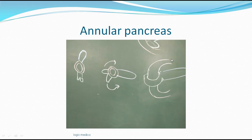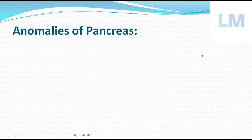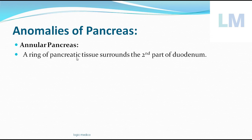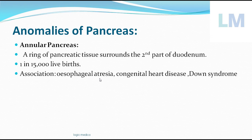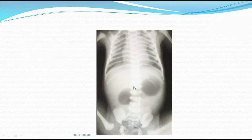This anomaly of the pancreas, called annular pancreas, results from a ring of pancreatic tissue surrounding the second part of the duodenum. It occurs in approximately one in fifteen thousand live births. It is associated with other conditions such as esophageal atresia, congenital heart disease, and Down syndrome — genetic abnormalities linked to the same genes.